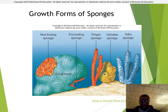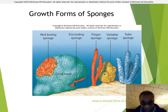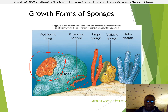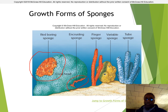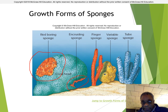Let's look at some of the growth forms of sponges. There is an encrusting sponge that grows on the side of a coral head. There is a red boring sponge — boring sponges actually bore into the surface of corals and monopolize the external space, allowing for greater efficiency of filtration of food particles. There is also a finger sponge, a variable sponge, which basically means it has a variable shape, and a tube sponge.